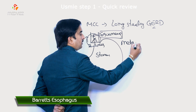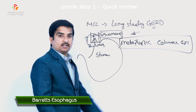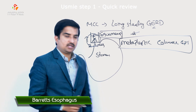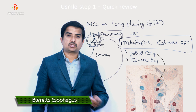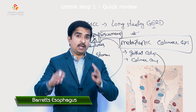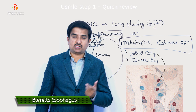Looking at the microscopic findings, the squamous epithelium of the esophagus is replaced by metaplastic columnar epithelium — this is the hallmark of Barrett's esophagus. The metaplastic columnar epithelium contains mucosal glands with goblet cells, columnar cells, and inflammatory cells. These cells may also display signs of dysplasia, such as enlarged hyperchromatic nuclei.